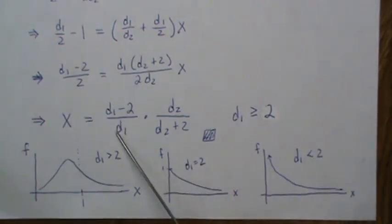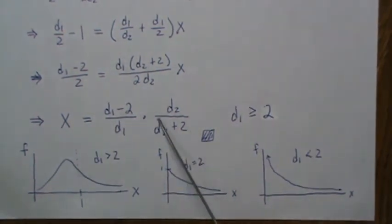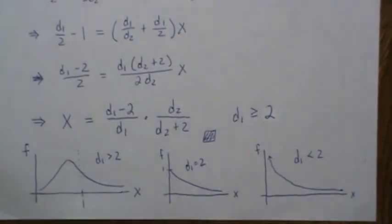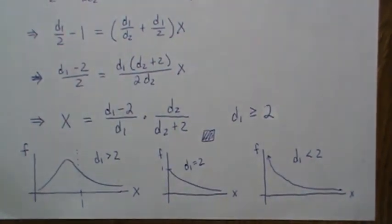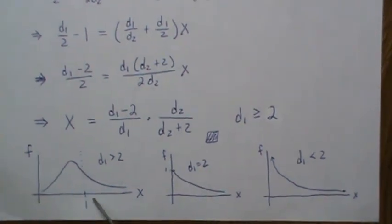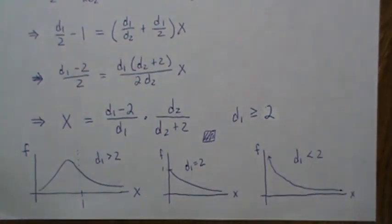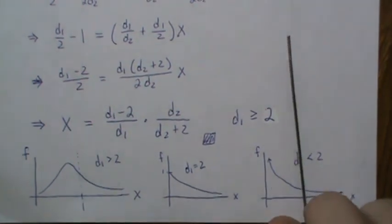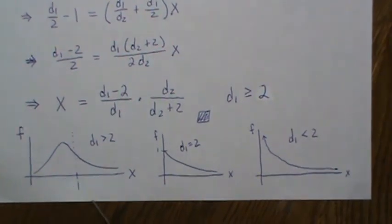But this is always less than one. And this is always less than one. So the F distribution always has a mode less than one, which to me is kind of interesting.